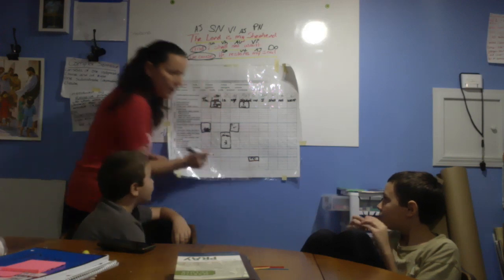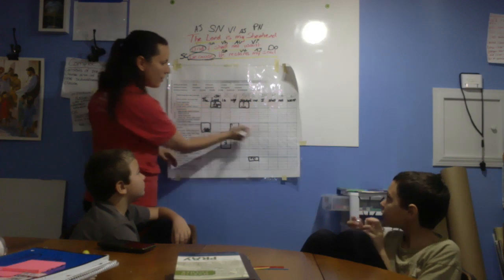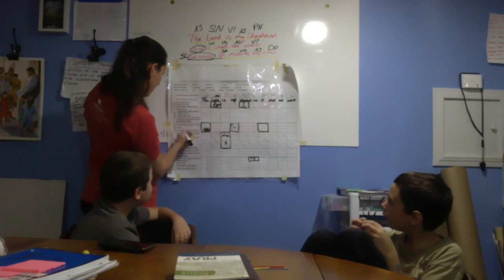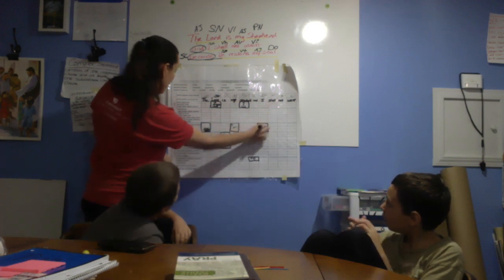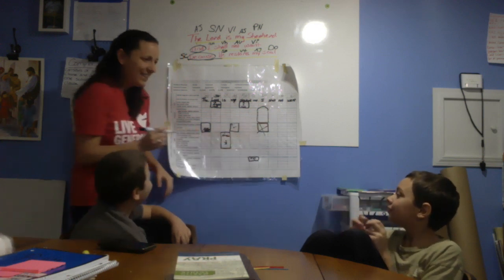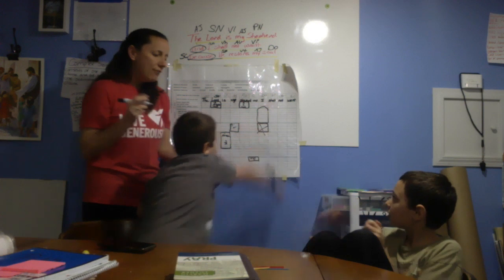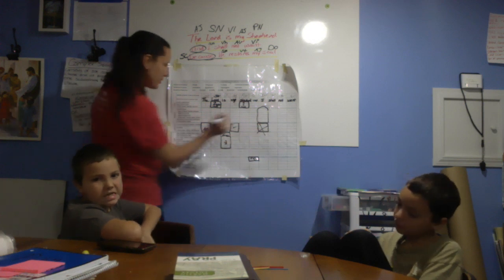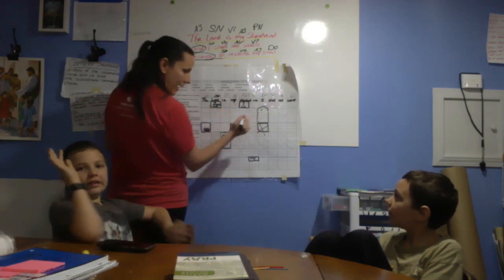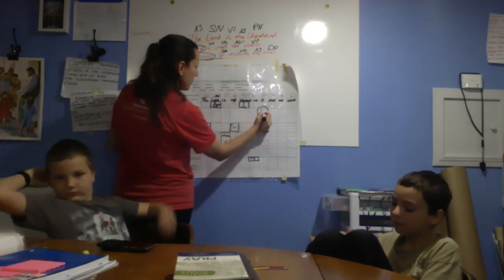What are our coordinating conjunctions? For, nor, but, or, yet, so — FANBOYS. Okay. Elden, 'I' is a pronoun, right? Is 'I' first, second, or third person? Remember we go: I, you, he, she, it. First. Right, it's first. Good job. Is it singular or plural? Singular. Because if it was plural it would be 'we,' right? So singular.